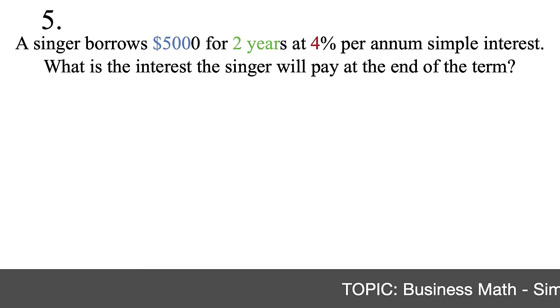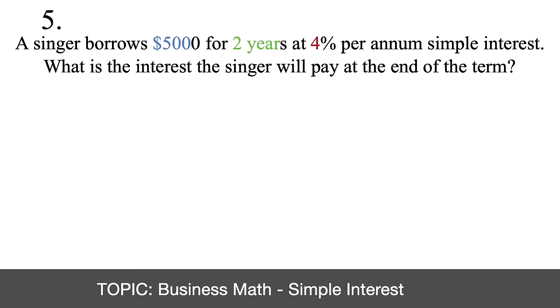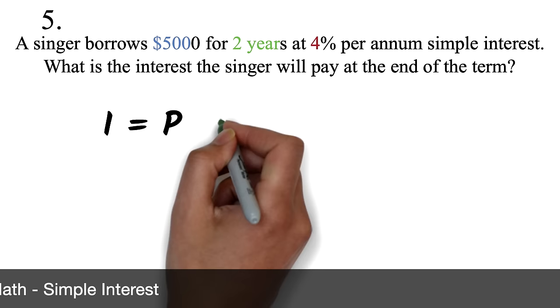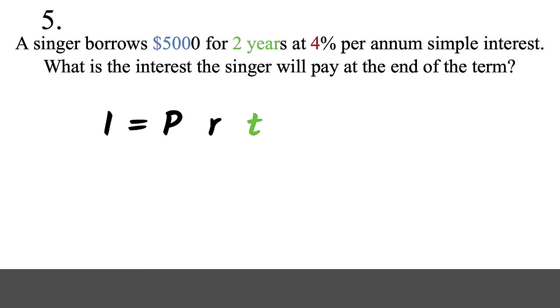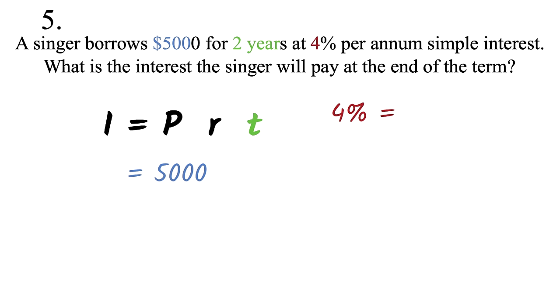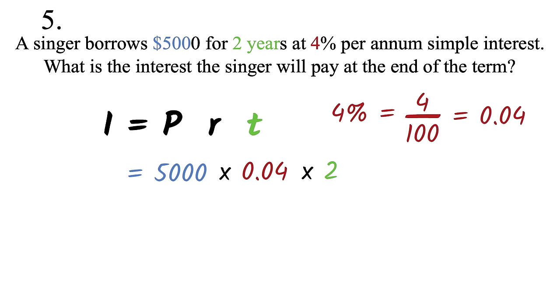Question 5. A singer borrows $5,000 for 2 years at 4% per annum simple interest. What is the interest the singer will pay at the end of the term? Simple interest questions are basically formula work, and the formula is given on the GED formula sheet: Simple Interest = Principal × Rate × Time. The principal is $5,000, the rate is 4% = 0.04, and the time is 2 years. We compute 5,000 × 0.04 × 2 = $400. So the interest the singer will pay is $400.